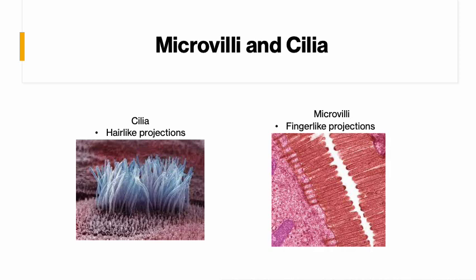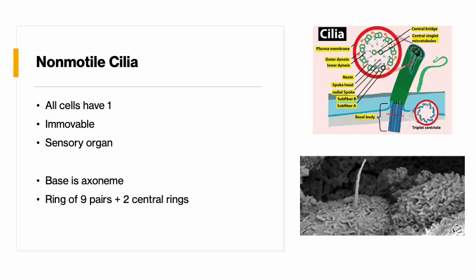Cells can use cilia for sensory or for movement. Every cell has one; some cells have many. The non-motile ones that every cell has are used for sensory. Every cell is going to have one non-motile cilium — they're immovable and used as a sensory organ, kind of like an antenna. It's like an angler fish with the one little antenna sticking out used to sense its environment, because cells don't have eyes or hands. They use the non-motile cilia to find their way around.